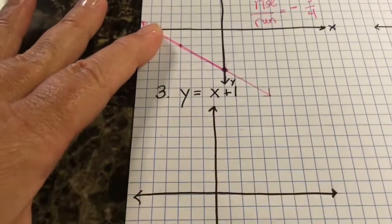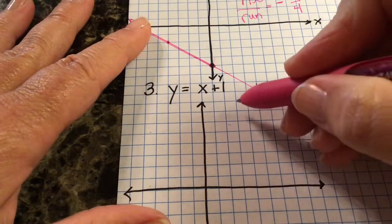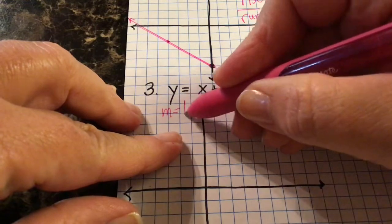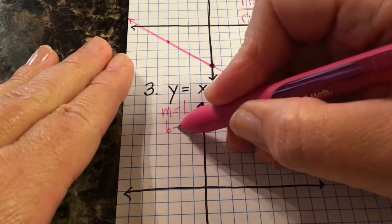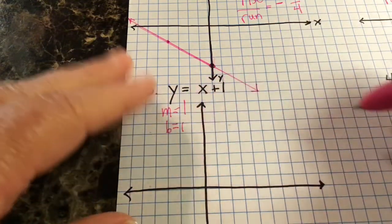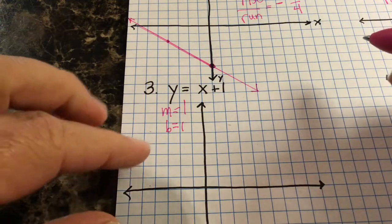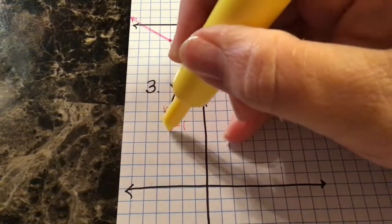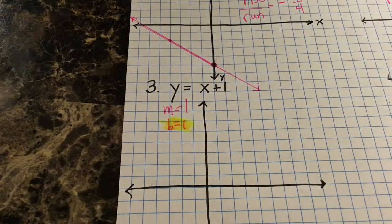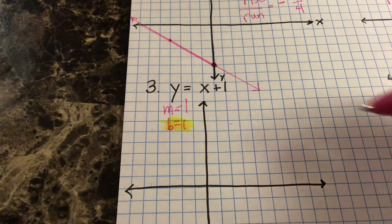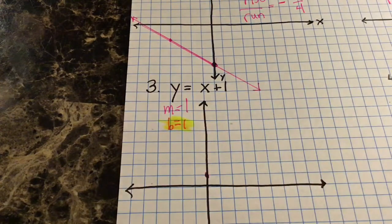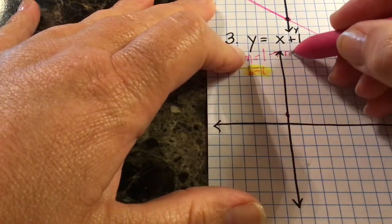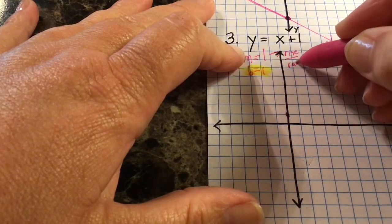Moving on to the next one: y equals x plus one. The slope is one — one is understood to be there — and the y-intercept is one as well. So slope is one, y-intercept is one. I'm going to graph my y-intercept first; remember, b comes first in the alphabet.